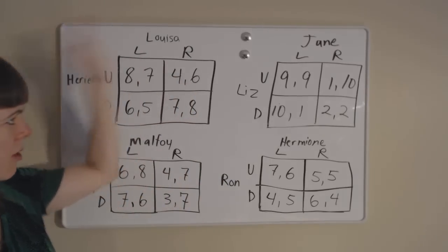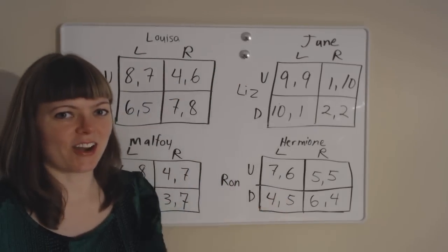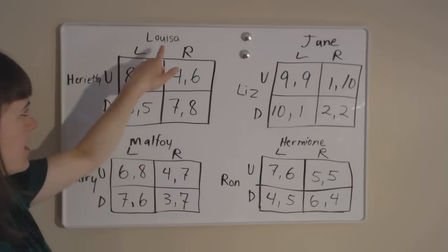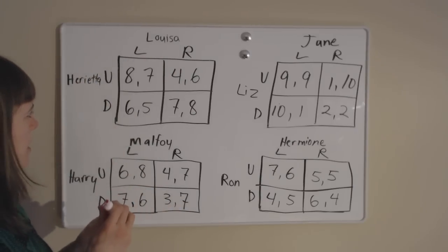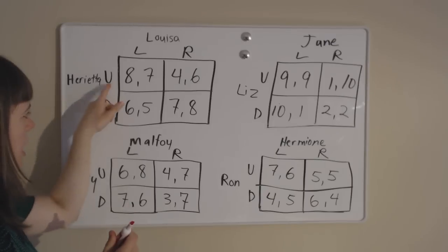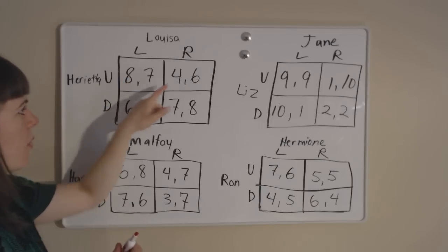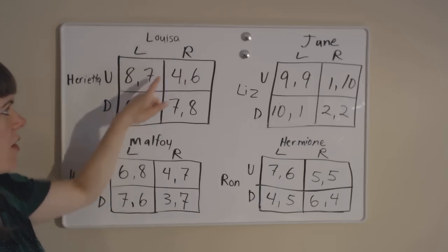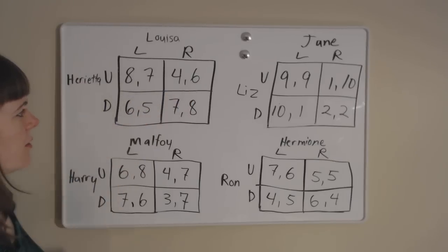All my examples are from Jane Austen and Harry Potter. So we have Henrietta and Louisa from Persuasion. Henrietta can go up or down, and she is player 1. Louisa can go left or right, and she is player 2.